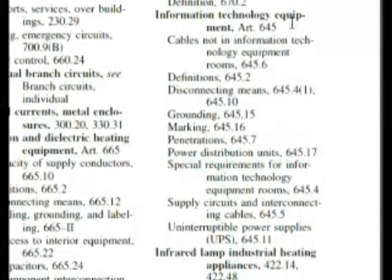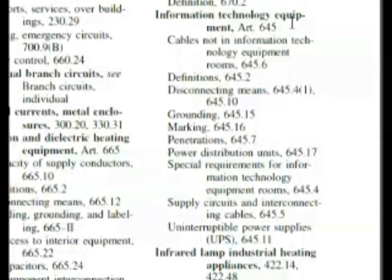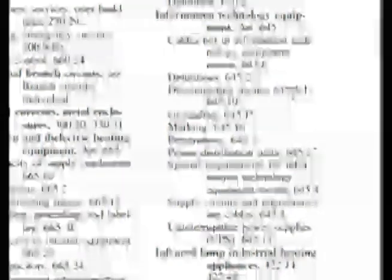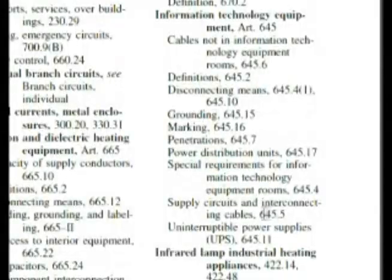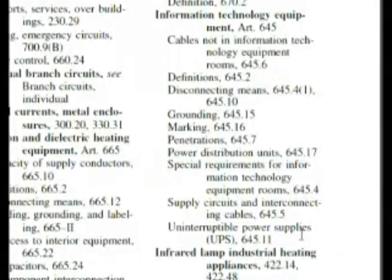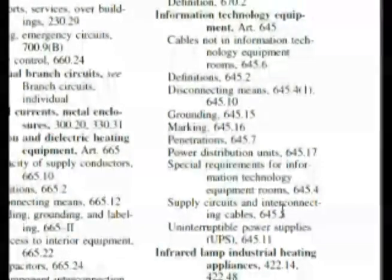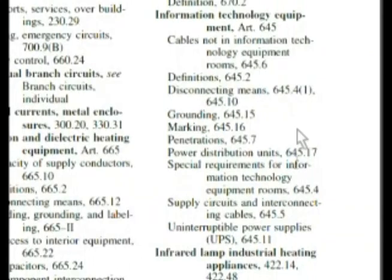The more parts of the code that you know, the faster it's going to help you look things up. Now we have to find something that works under this. It's talking about disconnecting means here — that could be something. And if we come down here to supply circuits and interconnecting cables, that was in our question — it was talking about interconnecting cables. So let's go to 645.5, disconnecting is 645.41, and then 645.10. I want to go to interconnecting cables first, simply because that wording was in our question. And if not, we'll be right in the area to check disconnecting means.